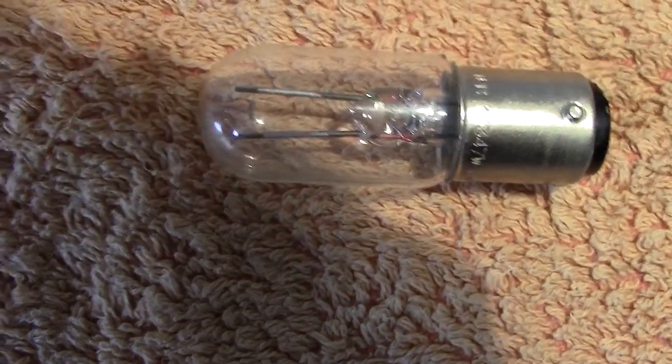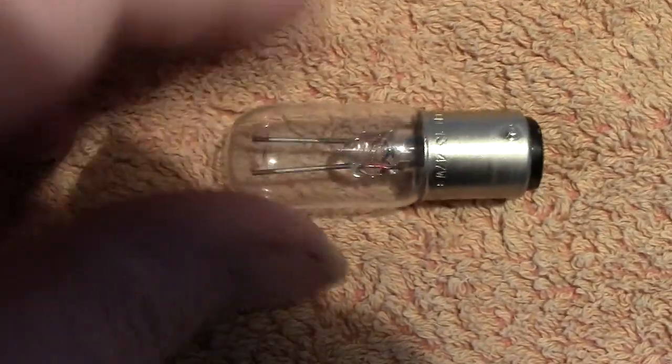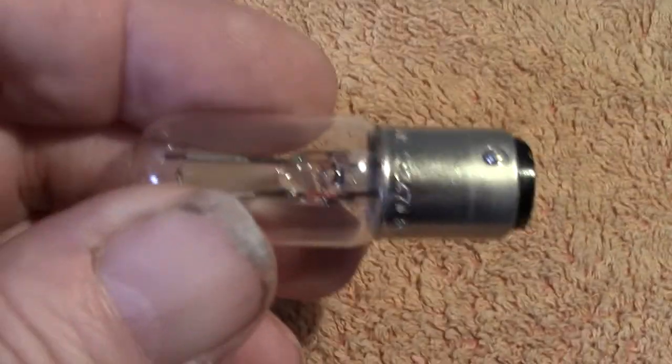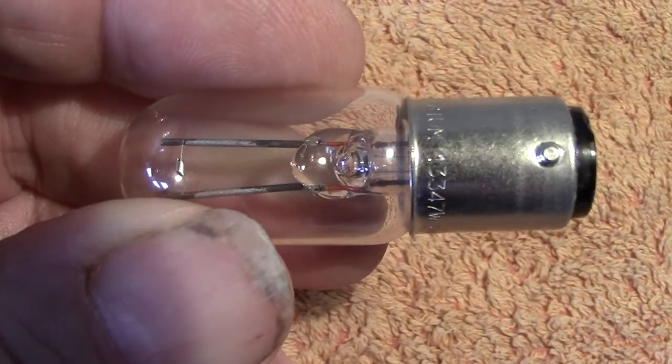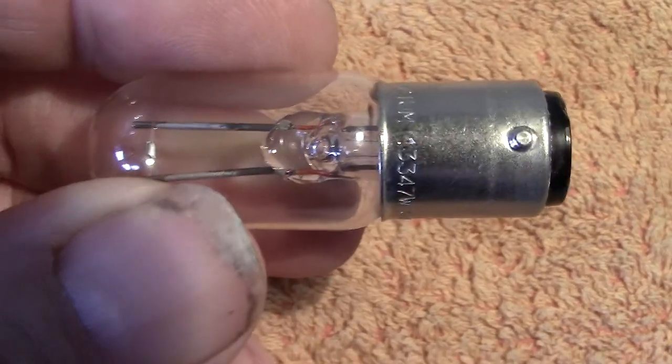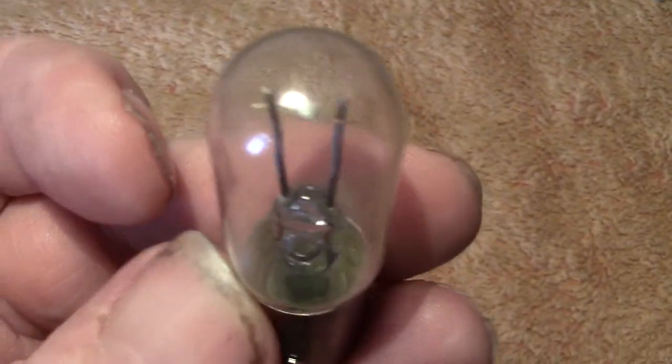Hi there, still on the theme of these lamps used in microscopes, we have a smaller example. This one is by Philips, it's a Philips 13347W, rated at 6 volts 15 watts. Looking at the filament once again, this flattened type, I'm hoping it's going to come out well.